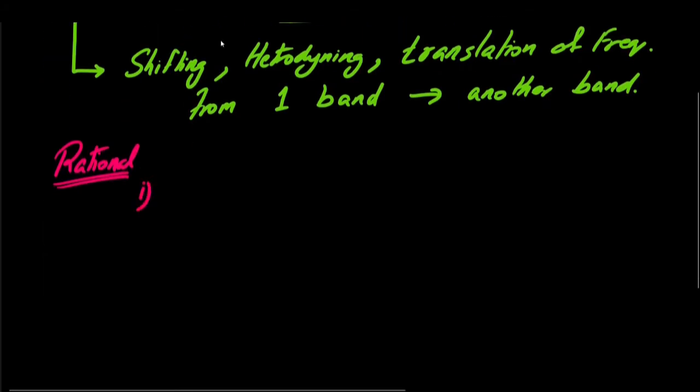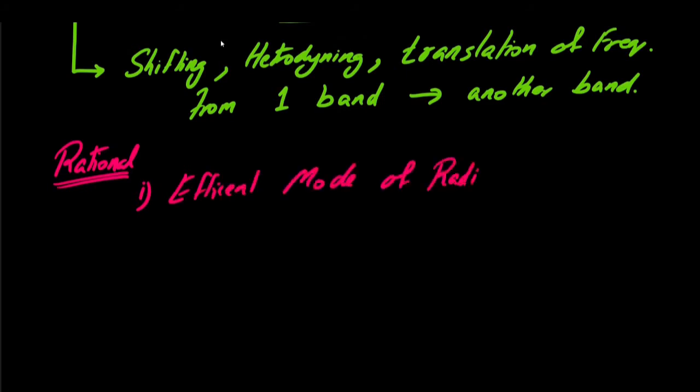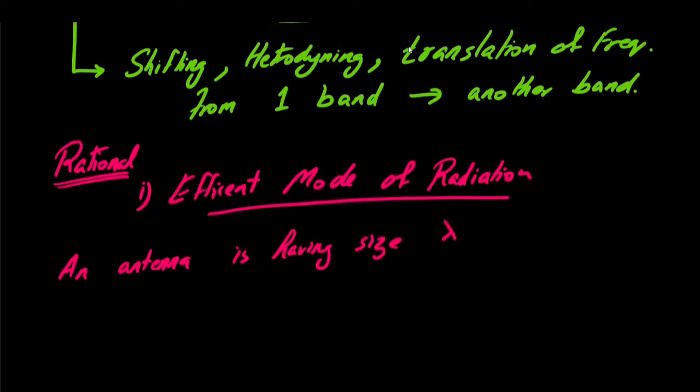The first rationale is an efficient mode of radiation. By efficient, we mean an antenna having a size which is roughly wavelength divided by 10. This wavelength is related with frequency, and we have the expression c equals f lambda, where c is speed of light, f is frequency in hertz, and lambda is the wavelength. This dictates that lambda is inversely proportional to frequency and directly proportional with antenna size.